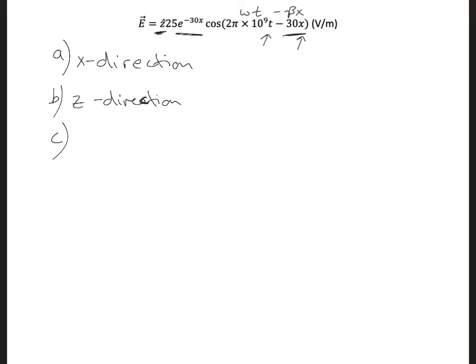So beta, omega we can relate to the frequency, but beta, which is 30, is equal to 2 pi over lambda. So we can use this to solve for lambda, and we get 0.21 meters.